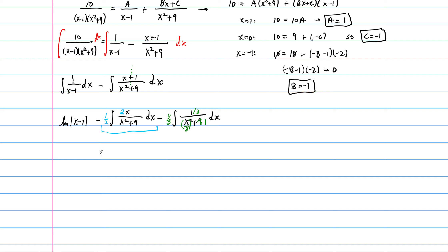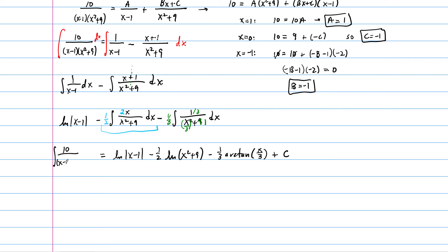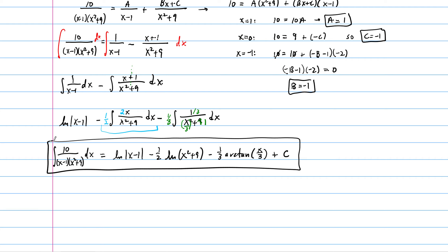So at the end of the day, the antiderivative of 10 over (x minus 1)(x squared plus 9) dx equals natural log of (x minus 1) minus one-half natural log of (x squared plus 9) minus one-third arctan(x over 3) plus C.